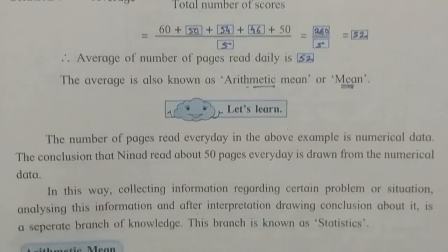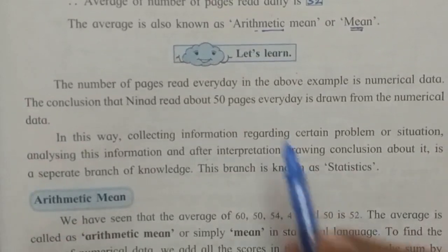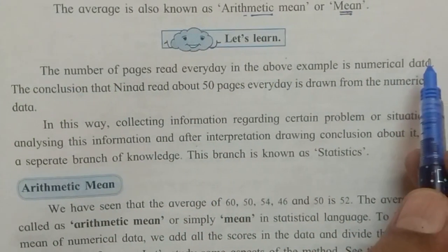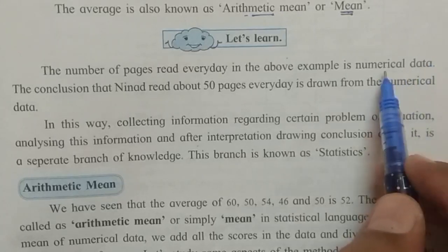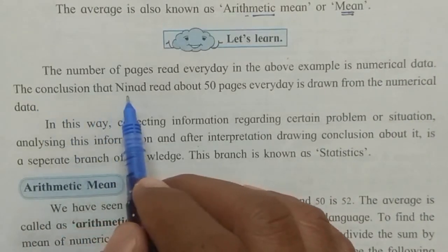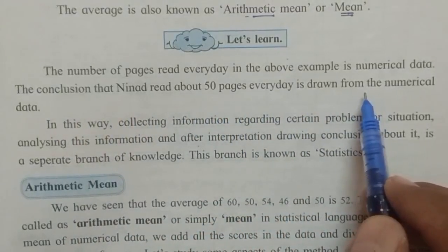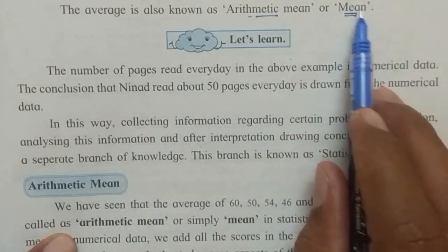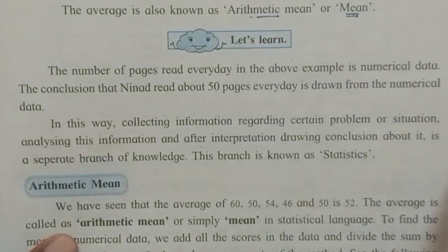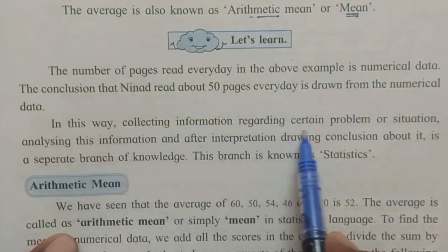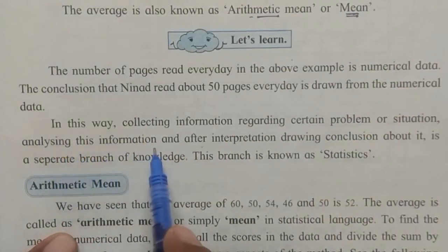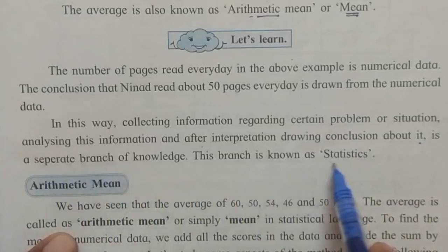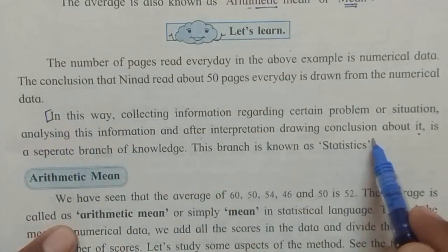Related to this point, our next further point is there. Let us learn the activity given. The number of pages read every day in the above example is numerical data — data given in number form. The conclusion that Ninad read about 50 pages every day is drawn from the numerical data. Collecting information regarding a certain problem or situation, analyzing this information, and after interpretation, drawing a conclusion about it is a separate branch of knowledge. This branch is called Statistics.